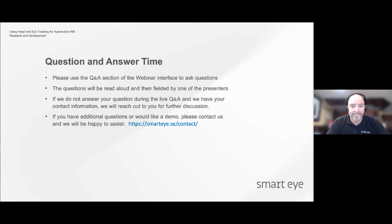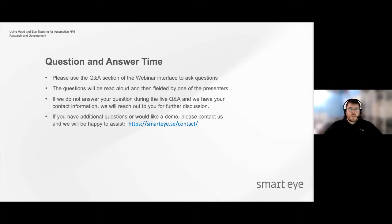Next question: how long does it usually take to set up a vehicle? On average, it's about a two-hour process from start to finish. It involves placement of the cameras, running the cables so they aren't interfering with the driver's space, putting the lights in the right location, and then building the world model as described earlier — enabling the ability to visualize where somebody's looking within the cabin and track their gaze on various AOIs.